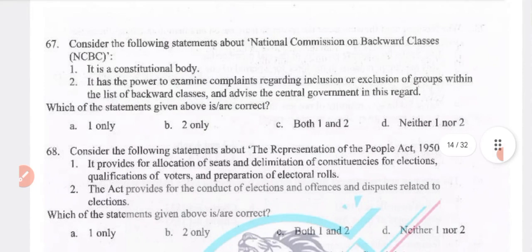Consider the following statement about NCBC — National Commission for Backward Classes: it is a constitutional body and has power to examine complaints regarding the inclusion and exclusion of groups within the list of backward classes and advise the central government. Answer: both statements 1 and 2 are correct — option C.